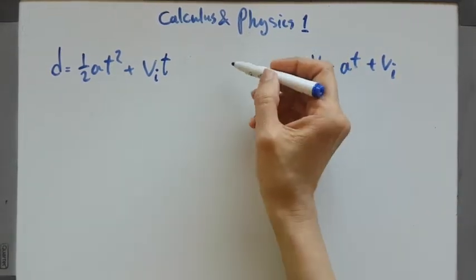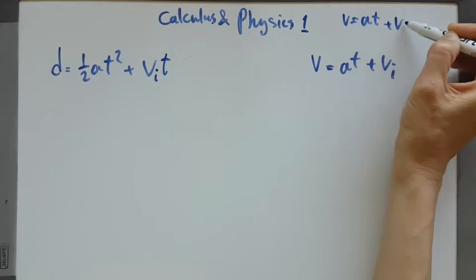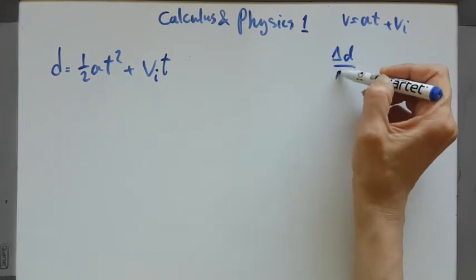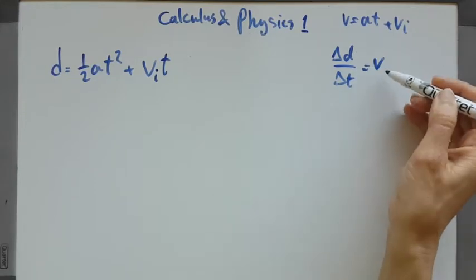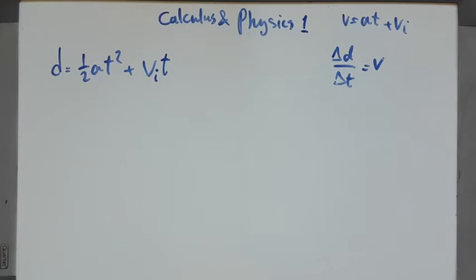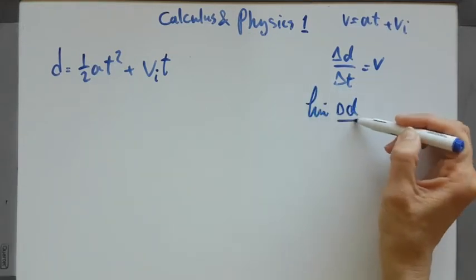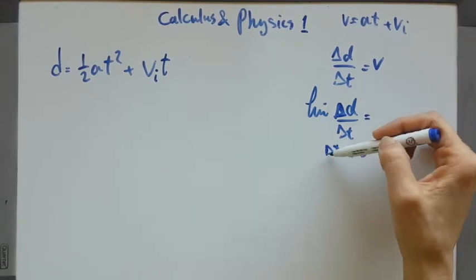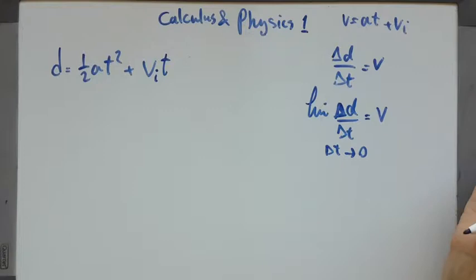I want to tell you something. Do you remember that velocity is AT plus VI? And do you remember that delta D over delta T is actually velocity — the change in displacement over time is velocity? So imagine that this change is not constant and you want to find the instantaneous velocity in a certain situation. In that case, you find the limit of delta D over delta T when delta T goes toward zero, and at that specific T you can find the instantaneous velocity.